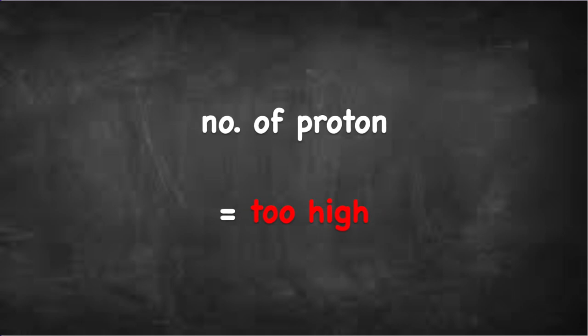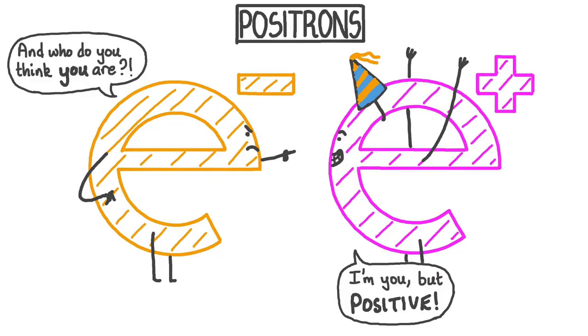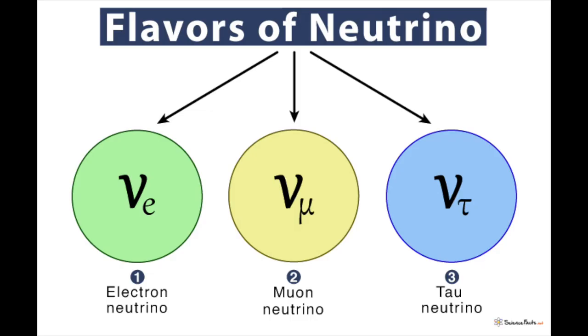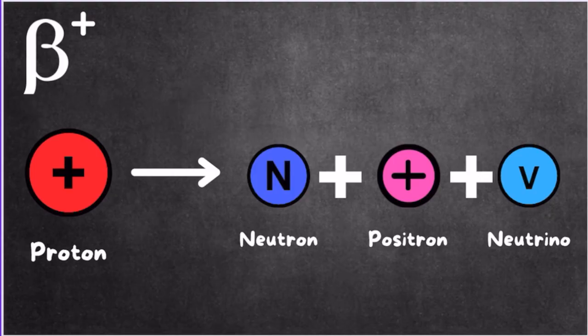If the number of protons is too high compared to neutrons, beta plus decay occurs. In beta plus, a proton spontaneously becomes a neutron and a positron, which is the antimatter equivalent of an electron with the same mass but a positive charge. The resultant energy transforms into a small particle called a neutrino because of the equation E equals mc squared, telling us that energy and mass can change into one another.